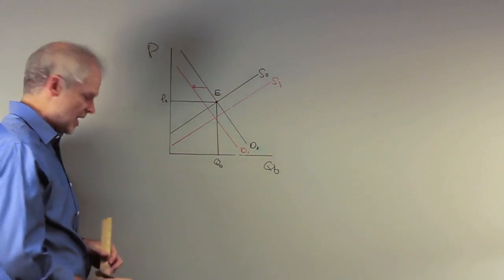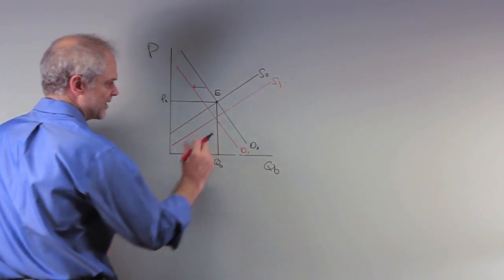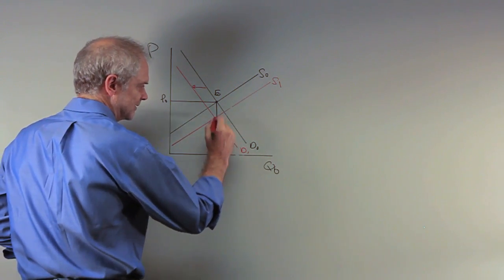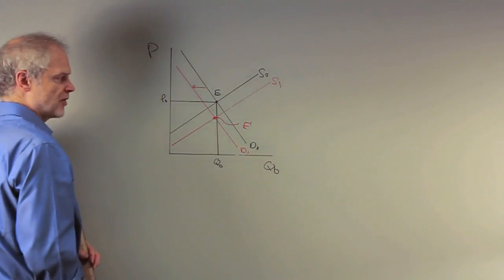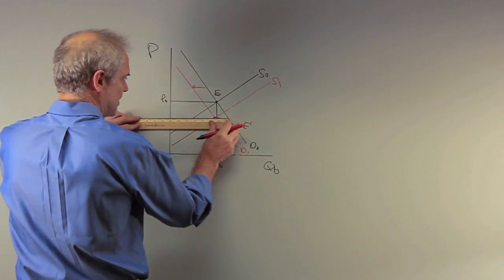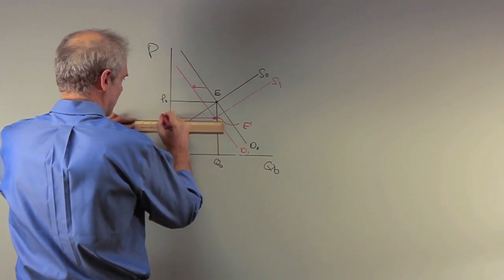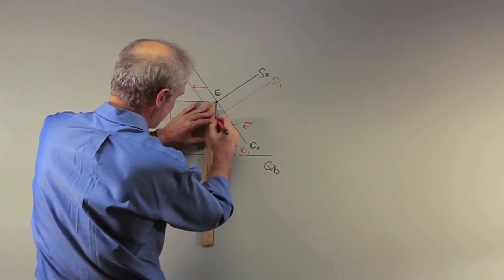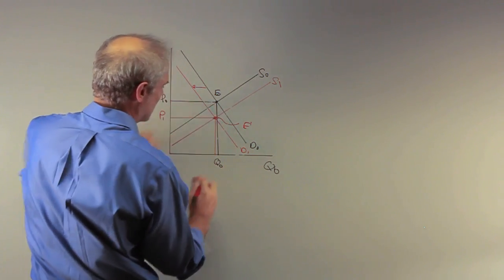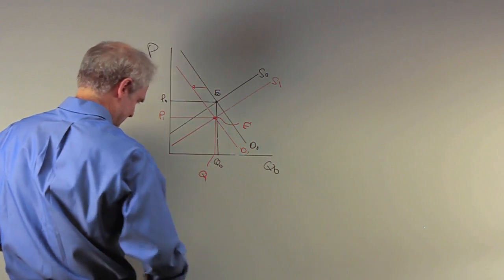The question is, where are we now? We're right here at this red dot. That's equilibrium one after our two changes. And what has happened? Well, price looks like it's certainly fallen. And equilibrium quantity, well, it's kind of been, the word's going to be ambiguous again.